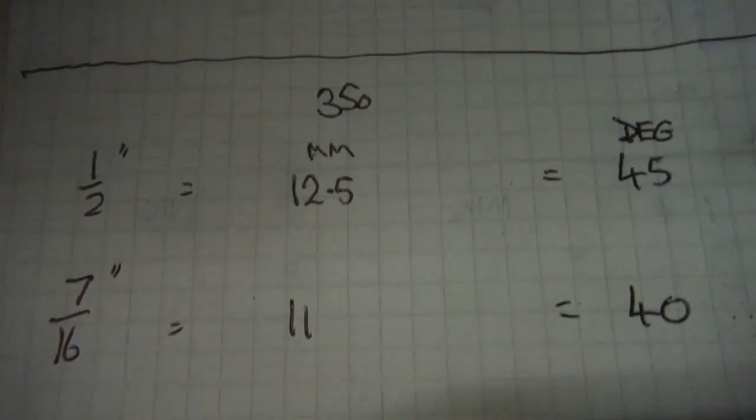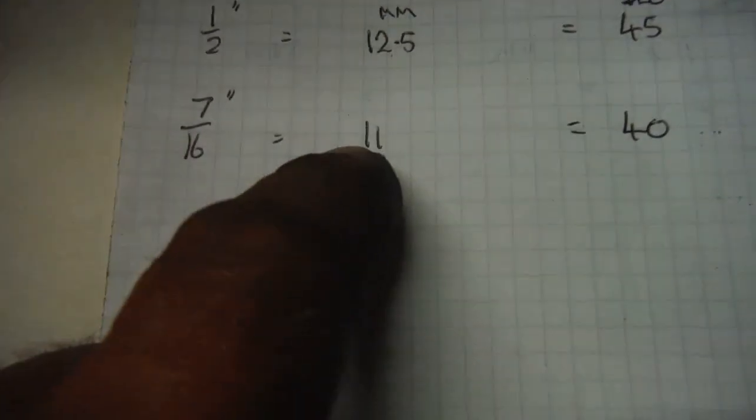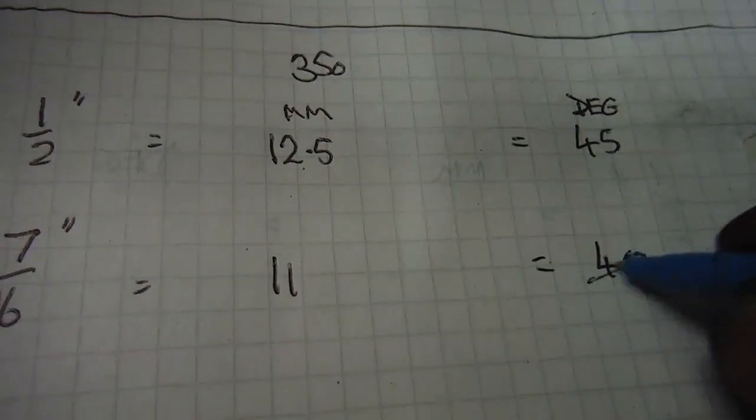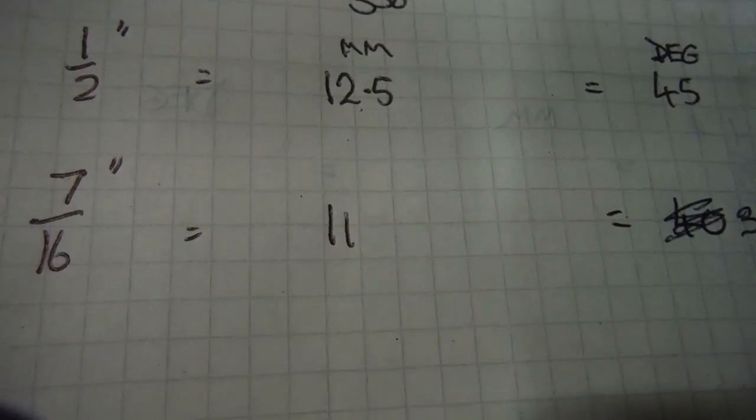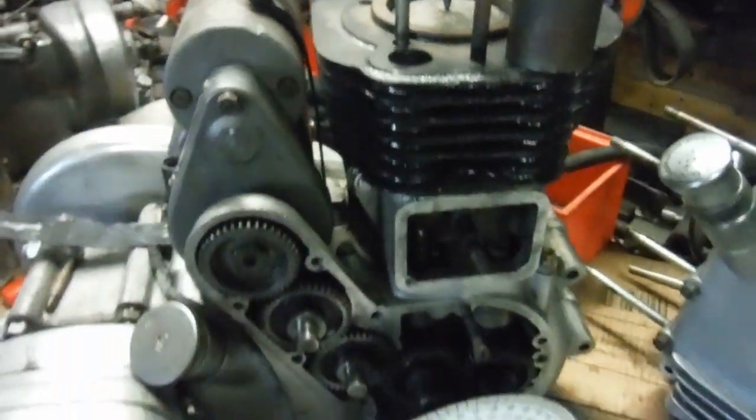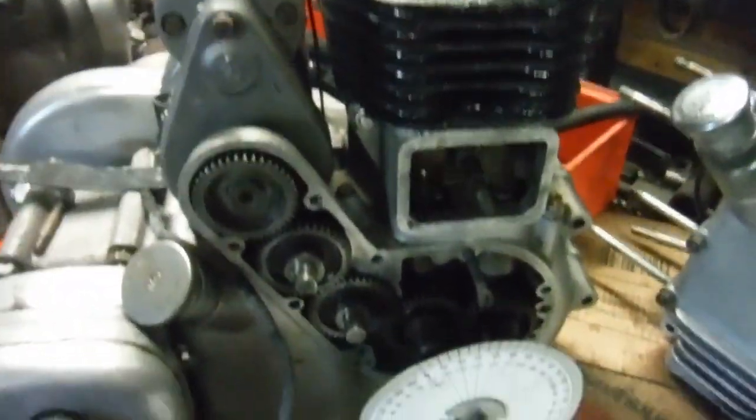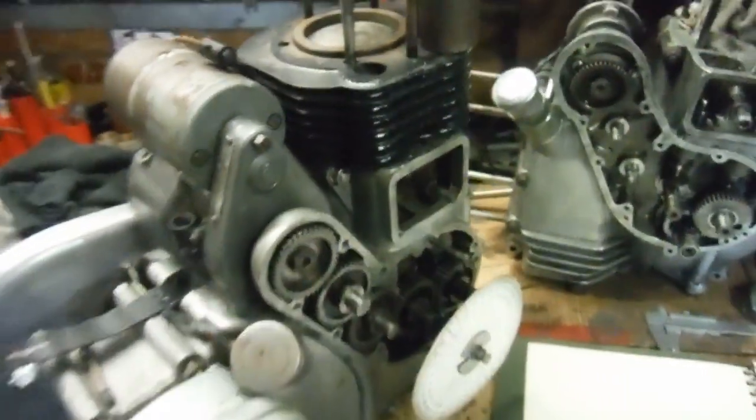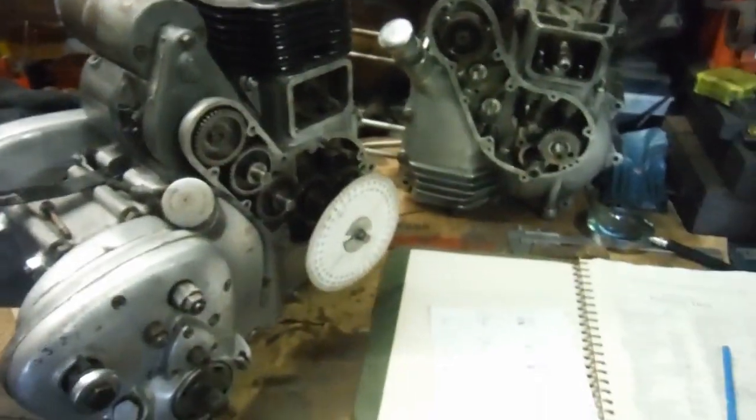Half inch, 12.5 millimeters, which does seem a lot but that's what the factory stated: 45 degrees before top. Seven-sixteenths or 11 millimeters, we actually had a whisker under that, about 38-39 degrees. Let's be generous and call it 38. There we go, once and for all I'm going to write this a lot tidier and I'll be adding that to the manual. Those are the factory figures and that's how they work out: degrees against inches against millimeters. You won't go far wrong with them.